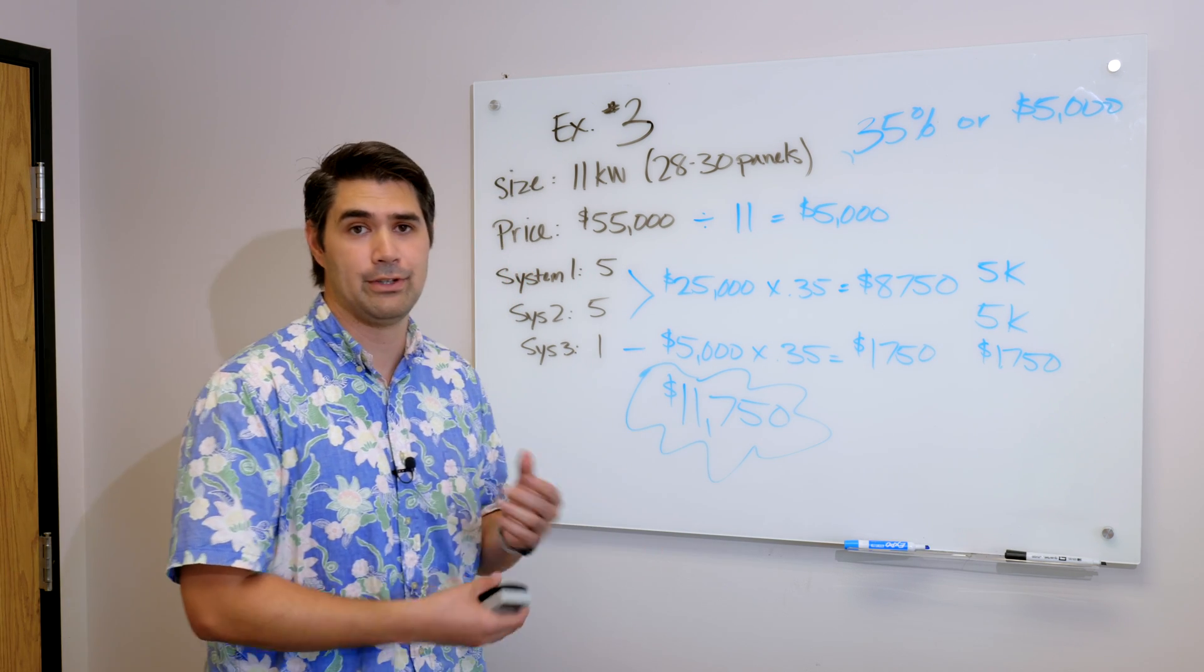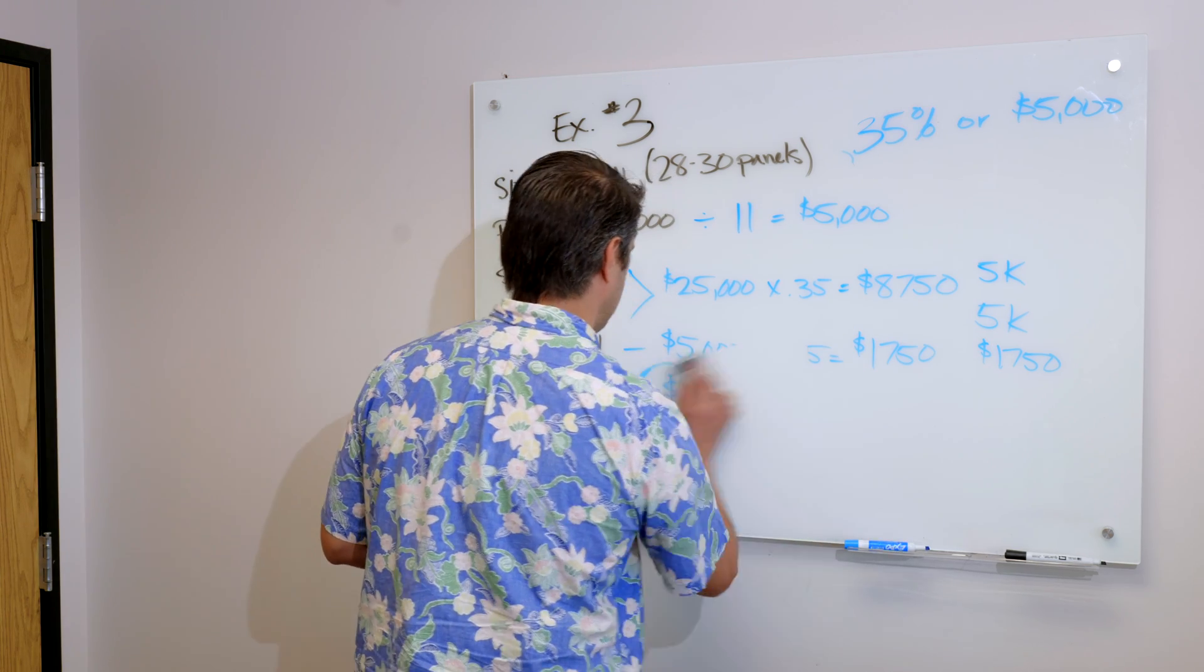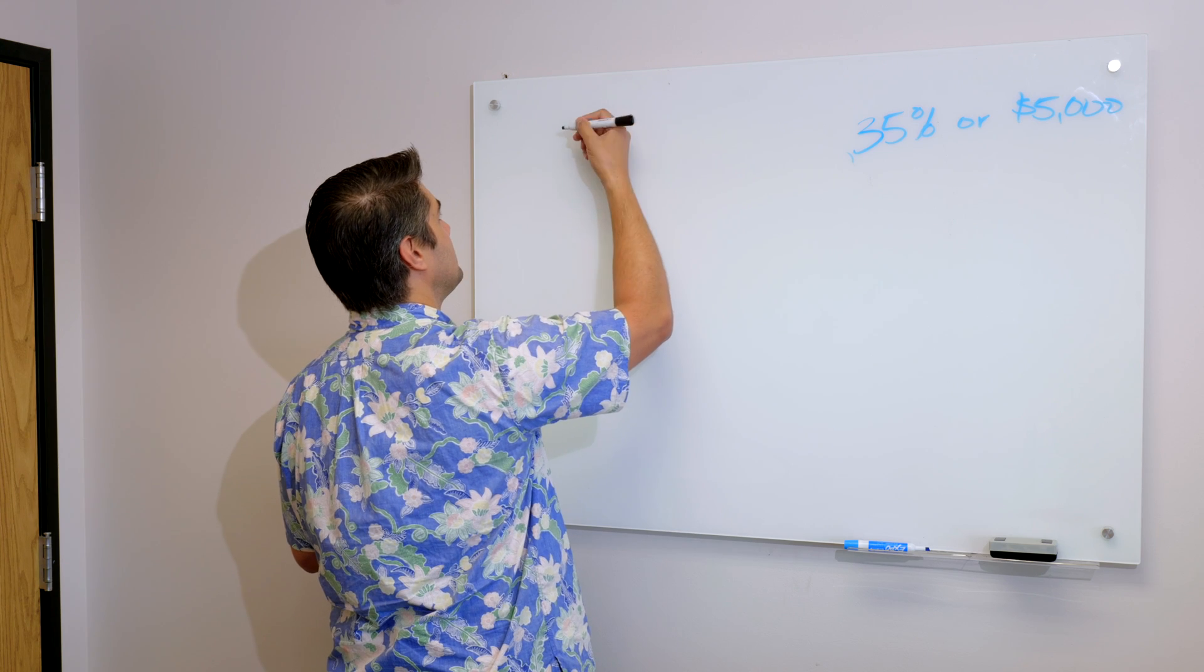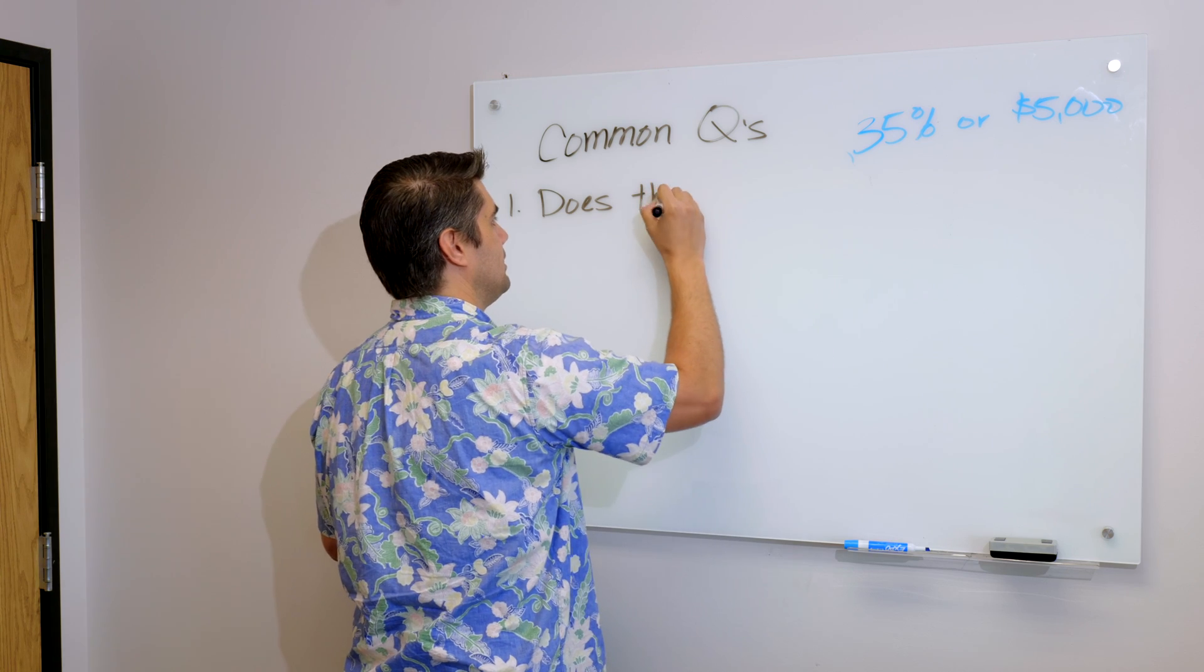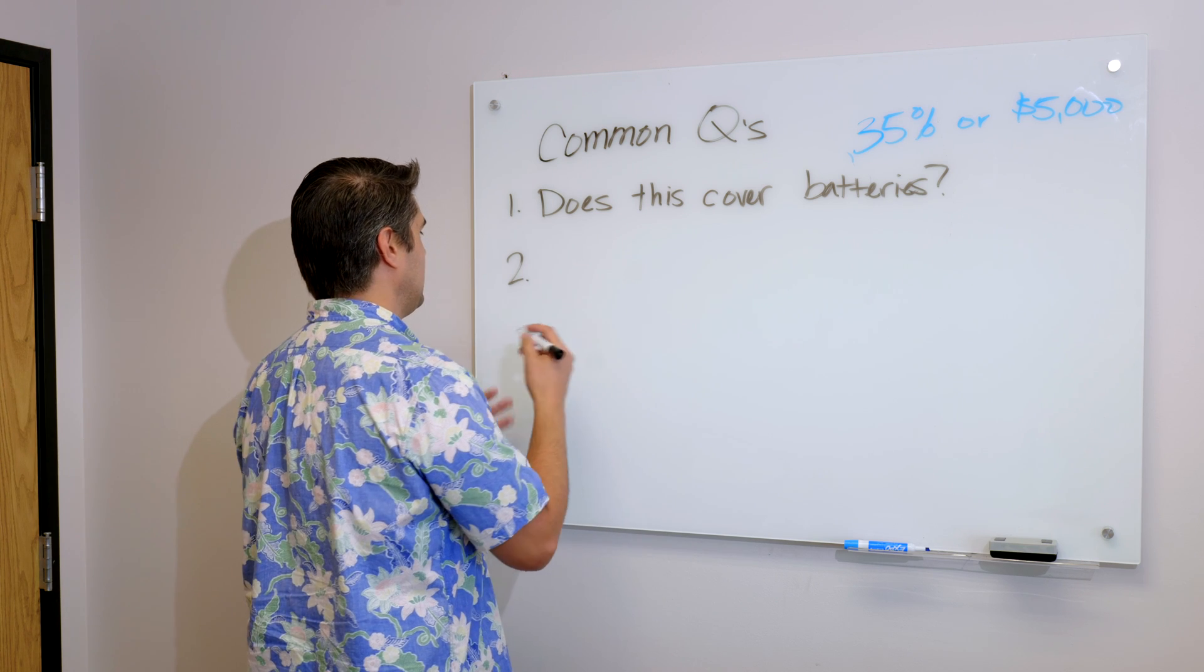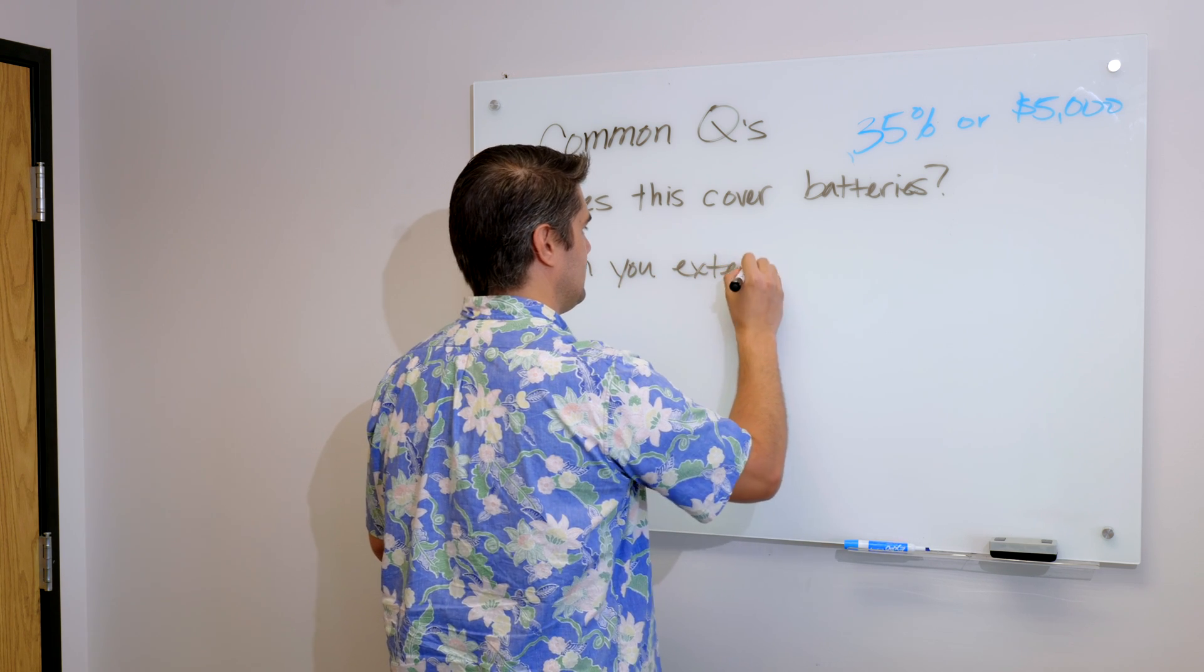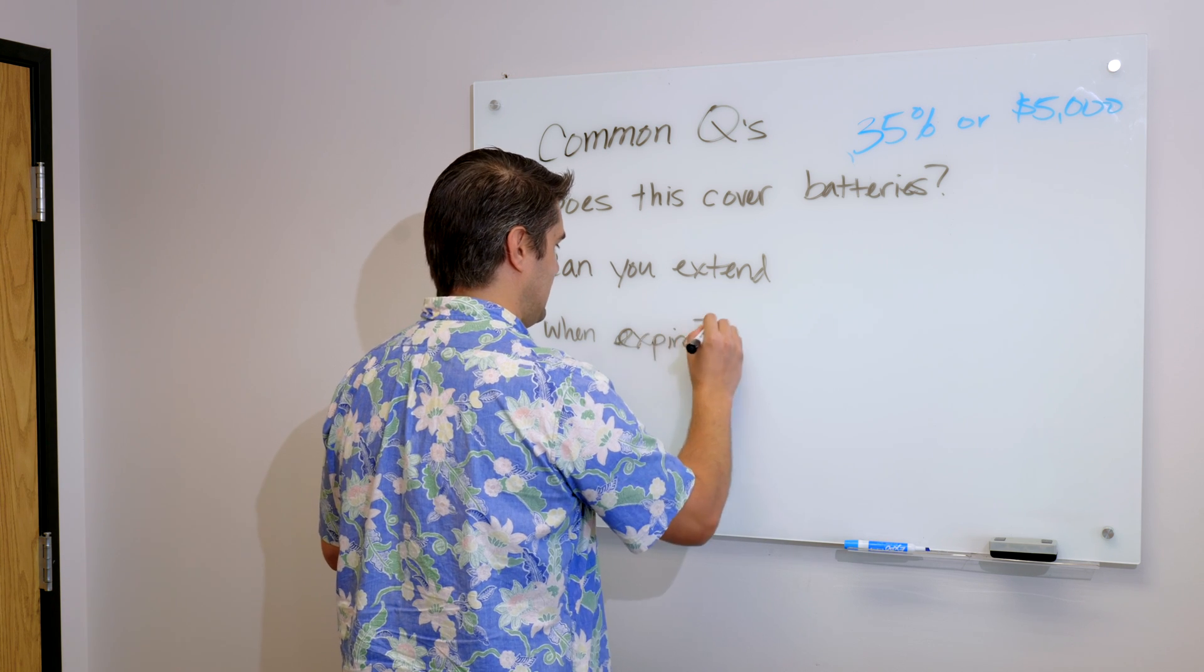So now we understand how to figure out the tax credit. Let's get into some common questions that come up. There's lots, but I'll answer three. Number one, does this cover batteries? Number two, I can't claim this all this year. Can I extend it out? Can you extend? And number three, when does it expire? When does the state tax credit expire?